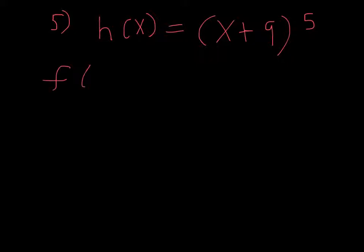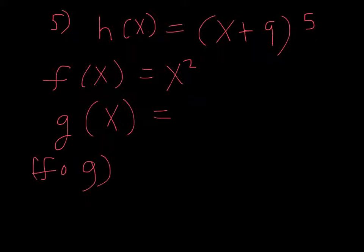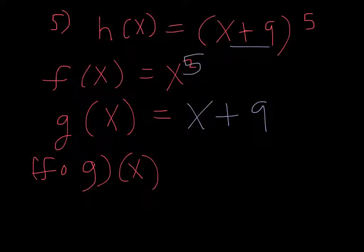Number 5, we have the function h of x is equal to x plus 9 to the 5th power. And we want to find, we're calling f of x the function x to the 5th. So if we're doing the composition, f composed of g of x, then what must g of x be? Well, g of x is our inside function, and that's x plus 9. So you would take x plus 9 and take all that to the 5th power, and that would give you f of g.